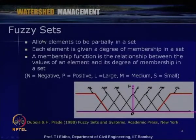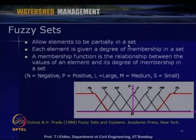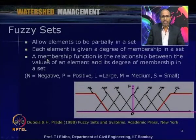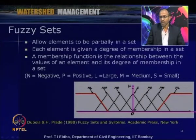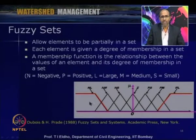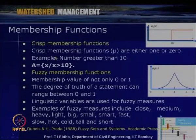Fuzzy sets allow elements to be partial members of a set. Each element is given a degree of membership, and a membership function defines the relationship between the values of an element and its degree of membership in a set. For example, the function mu can vary between negative and positive, or large, medium, and small, capturing how variations take place in between for the particular problem being considered.